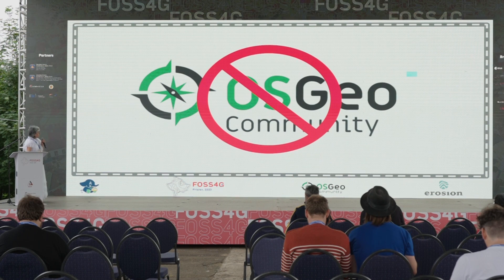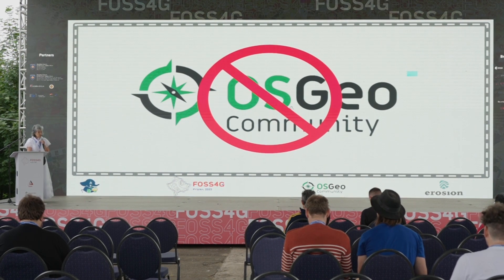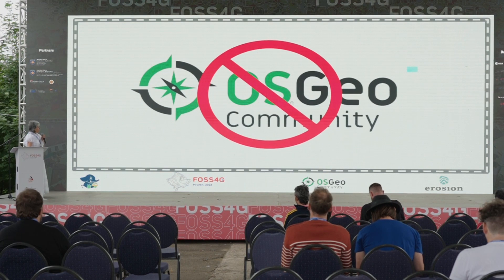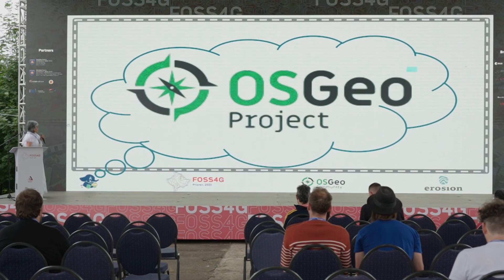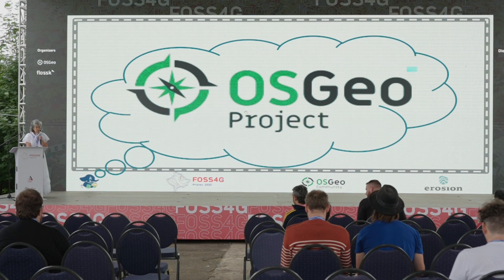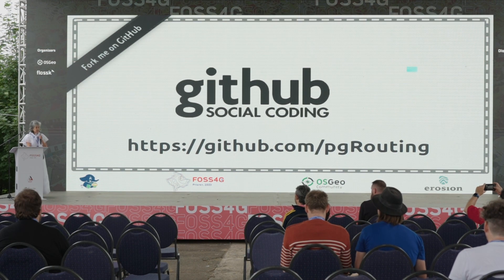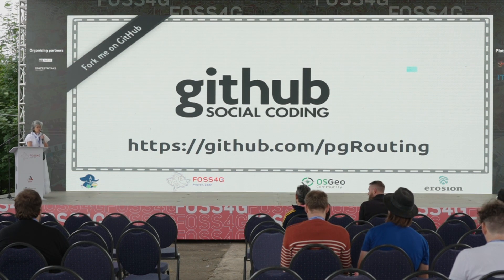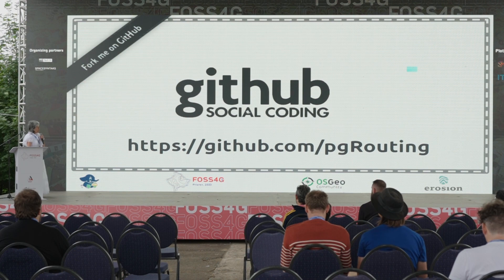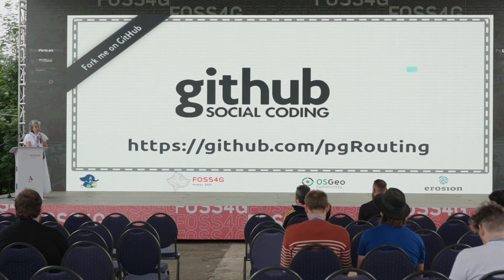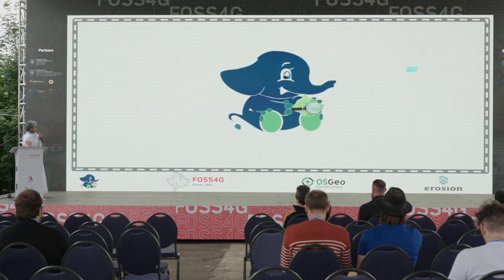PG routing is an 'always your community' project, but we don't want it to stay that way — we're doing some incubation because we want to become an 'always your' project. You can find the code on GitHub. Contributions are welcome: modifying documentation, bug fixing, or even just reporting a problem. Everything is welcome.